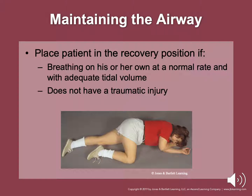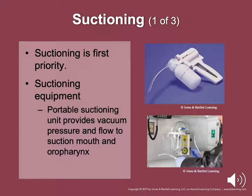Suctioning is the first priority — make sure you have your portable suction unit providing adequate vacuum and flow. If you hear gurgling, be prepared to suction. Make sure suction is readily available during any resuscitative efforts or post-resuscitation. Portable suction units should have a wide-bore, thick-walled, non-kinking tube, soft and rigid suction catheters, non-breakable disposable collection bottle, and supplies. Tonsil-tip catheter is best for suctioning the oropharynx. Soft plastic, flexible catheters — sometimes called French or whistle tips — can be used to suction the back of the mouth or ET tube in patients with a stoma.